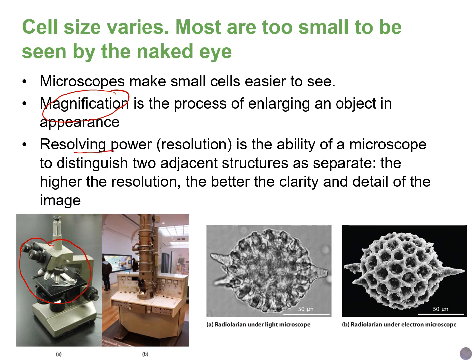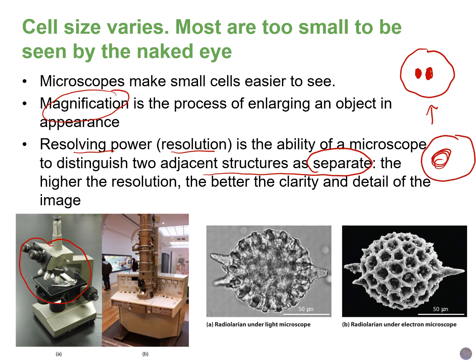Resolving power, also known as resolution, is the ability of a microscope to distinguish two adjacent structures as separate. For example, if I have a cell and two structures inside it that are pretty close to each other, with low resolving power it might look like a big blob — you wouldn't be able to tell that they're actually two distinct dots. But the greater the resolving power, the more you are able to see them as separate structures. This is similar to when I don't wear my contacts or glasses — I can't see them as two separate dots; it looks like a big blob.